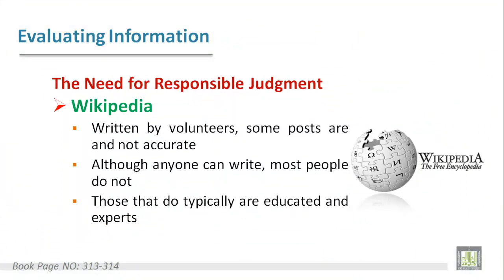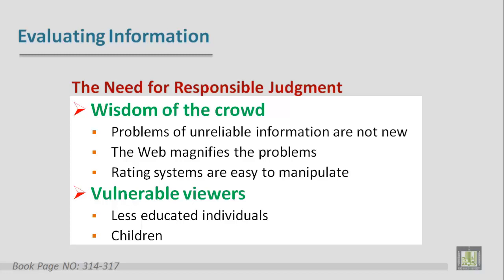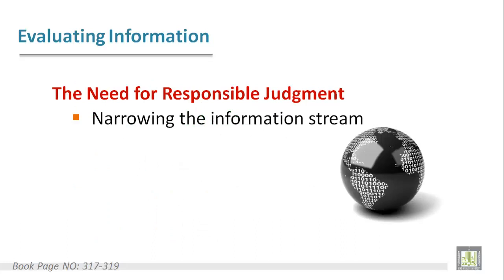An example is the website Wikipedia, in which volunteers write and edit. Thus, we cannot fully trust what is written in Wikipedia. It is true that those volunteers could be educated, but they are not necessarily experts. In this regard, you may find that the Web magnifies the problems of unreliable information. In addition, some viewers on the Web could be uneducated or less educated people, or also could be children.